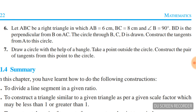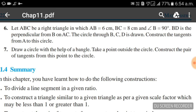Question number seven: draw a circle with the help of a bangle. Take a point outside the circle and construct a pair of tangents from this point to the circle. Practice these constructions for four marks — you will get a compulsory four marks question. Solutions are already kept in our channel; you can see the solutions.